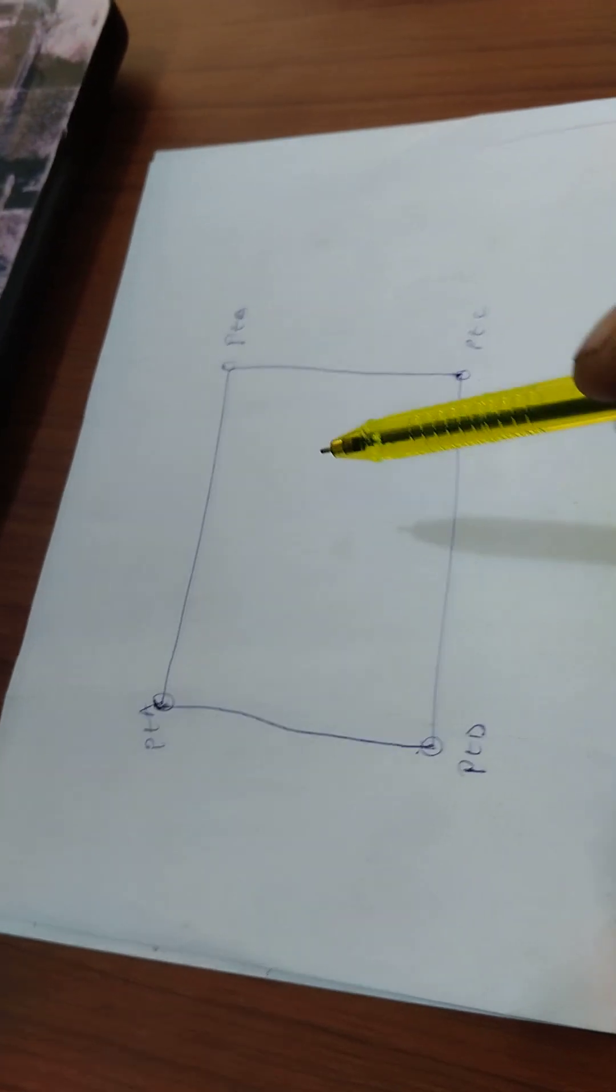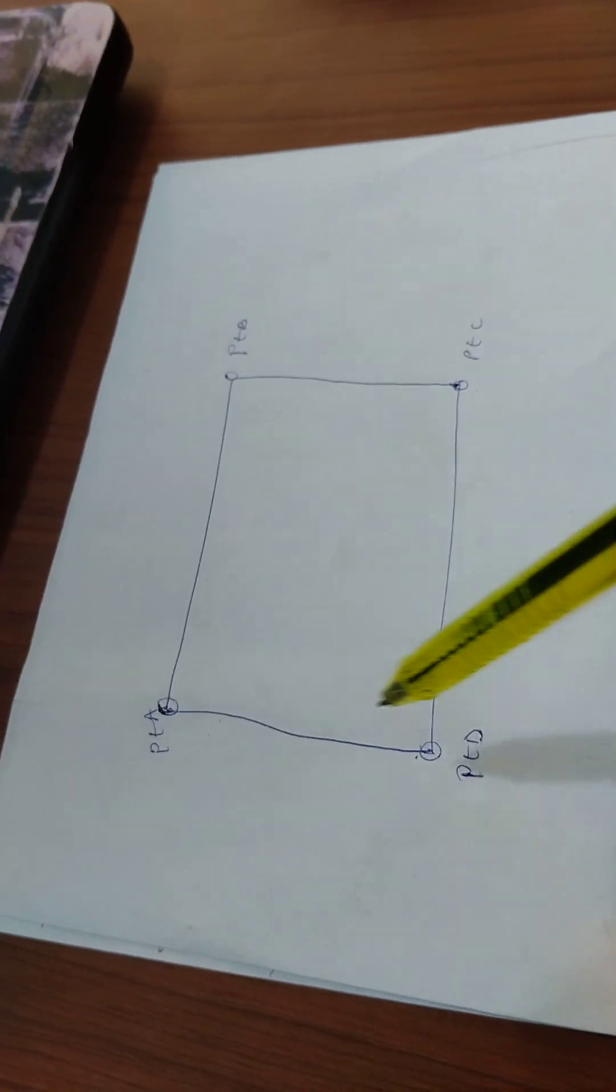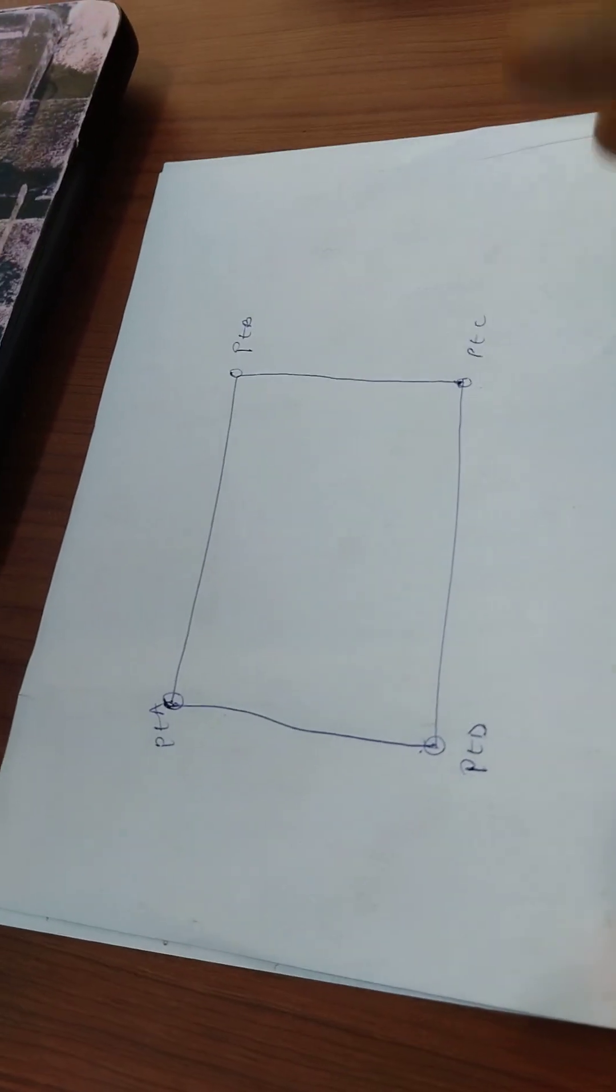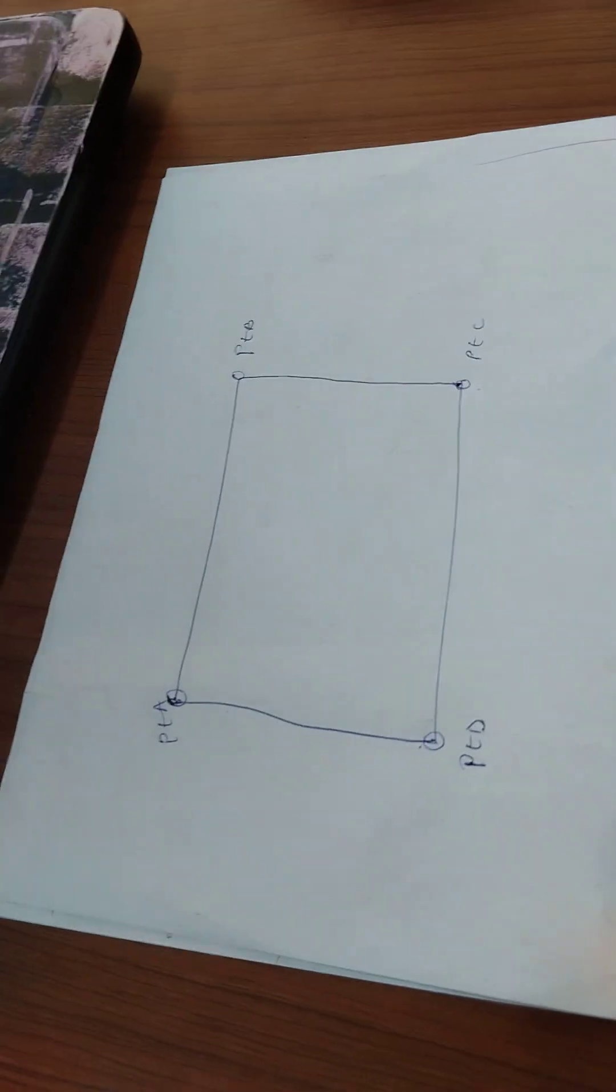So when you are through with monumentation, that is, you have put peg to demarcate your site, the next thing you do, you start your measurement. That is, you start your chaining.